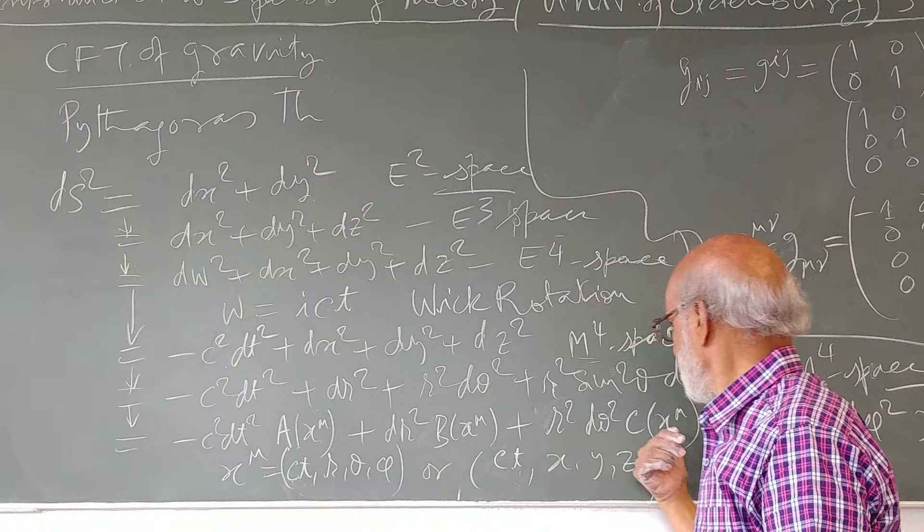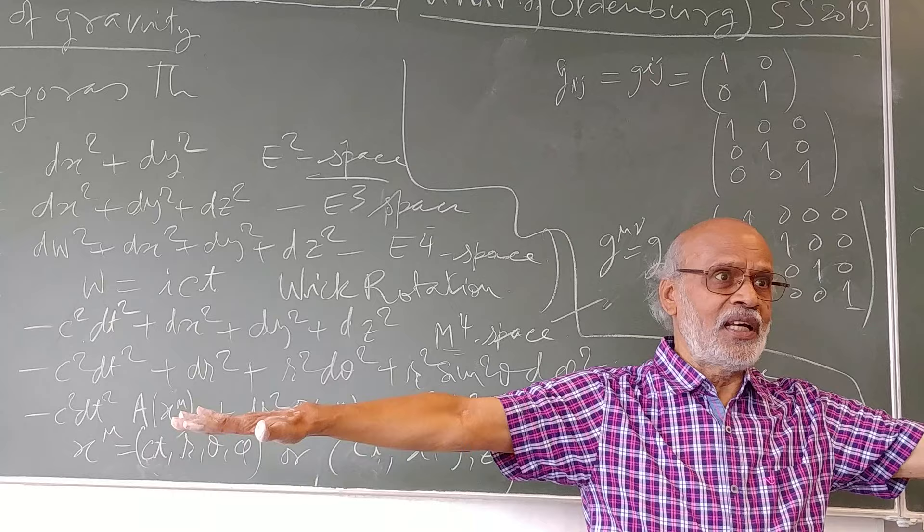So as soon as you make A, B, C, D, etc. as fixed constants, gravity would disappear. The curved manifold would now become a flat manifold and there would be no gravity.